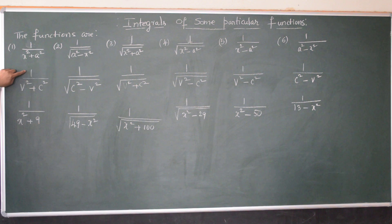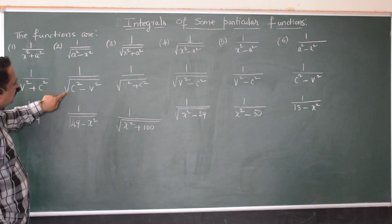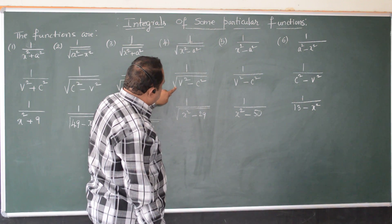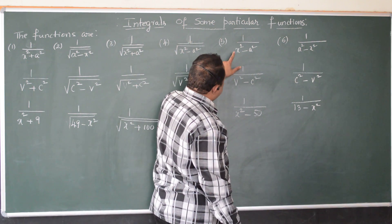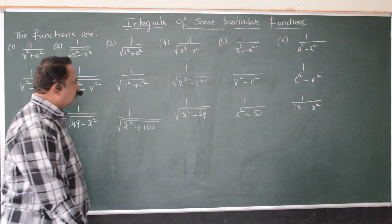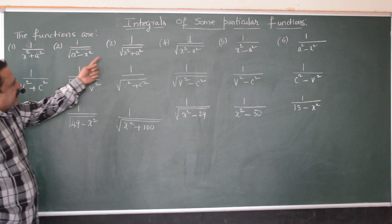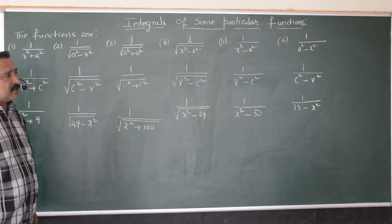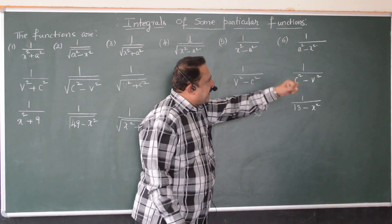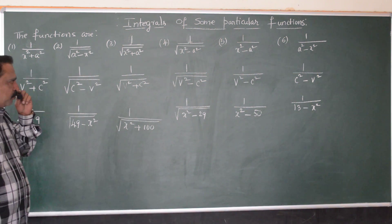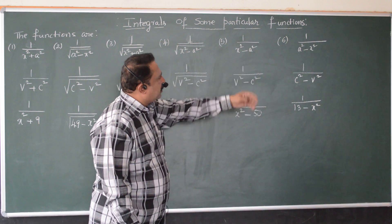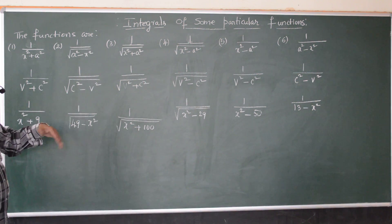Now observe the denominators: the first function has variable square plus constant square; the second has square root of constant square minus variable square; the third has square root of variable square plus constant square; the fourth has square root of variable square minus constant square; the fifth has variable square minus constant square; and the sixth has constant square minus variable square. The results of these six integrations must be memorized, and the derivation or proof of all these results is also very important.